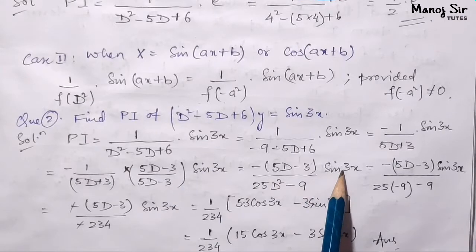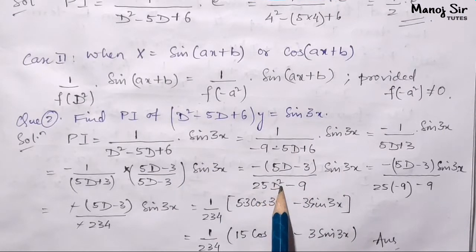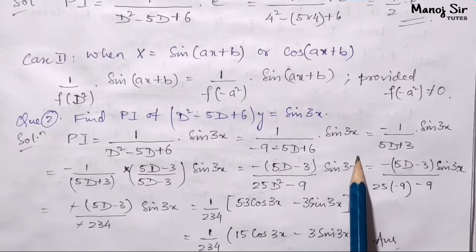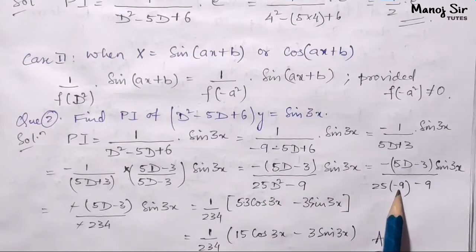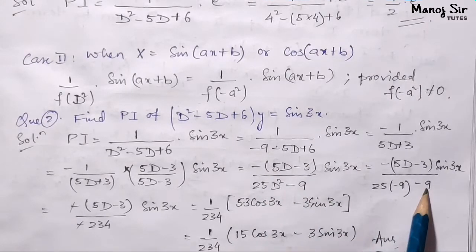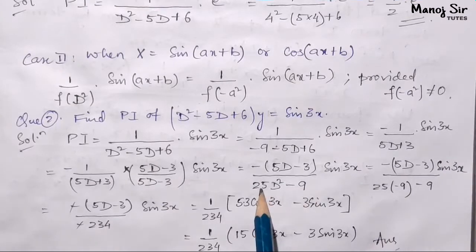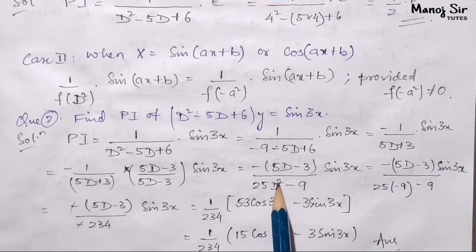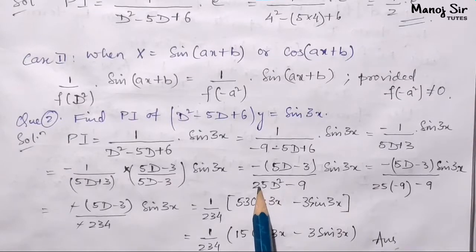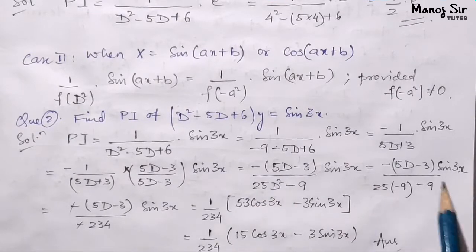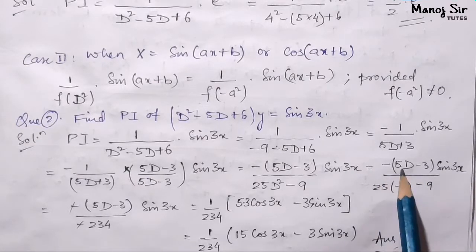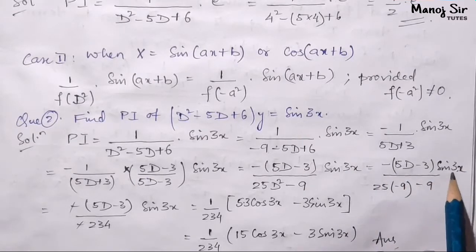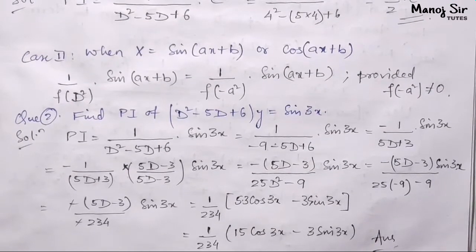Again, in the denominator we can see D squared, so in place of D squared we write 3 squared, which is 9, with a negative sign — that is minus 9. So the denominator becomes 25 times minus 9, and note that this D squared is in multiplication with 25. The numerator is minus of 5D minus 3, into sine 3x.